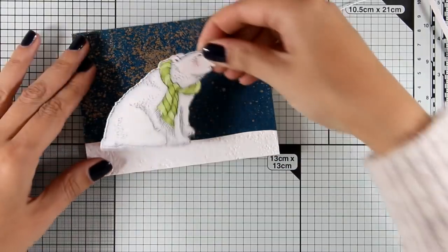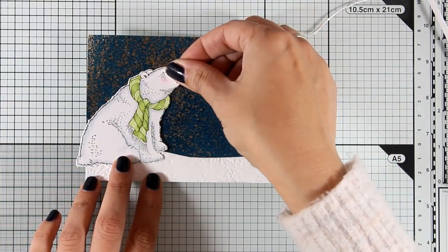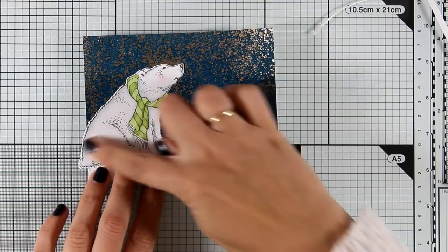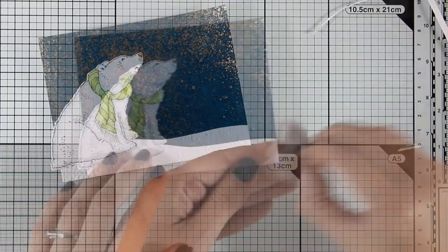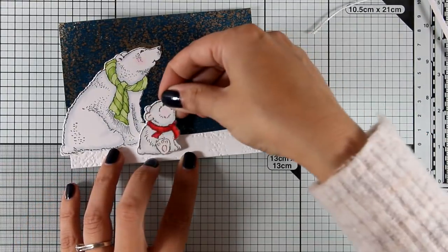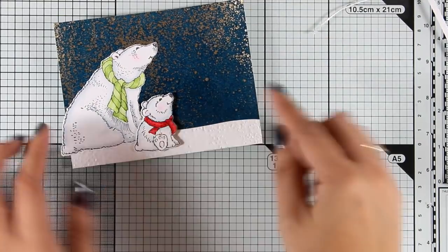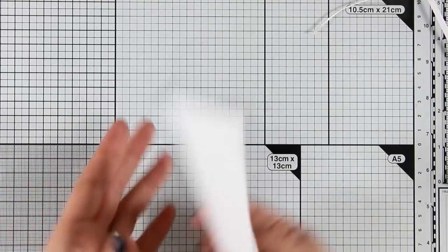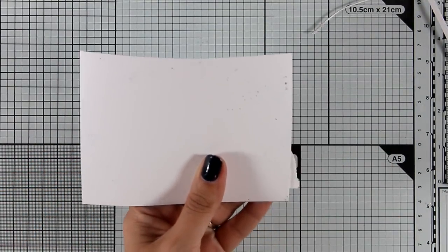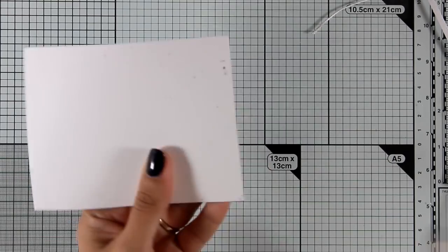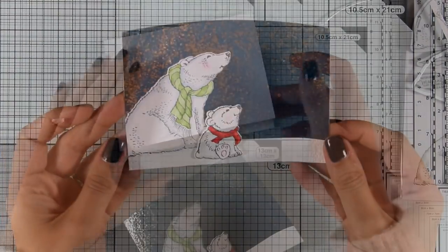Now it's assembly time. I'm going to stick on top both my polar bears. Remember that you can stamp way more than these and create a little family which could represent your own family—I think that could be an adorable idea. I'm going to chop off the excess paper and my panel is ready.